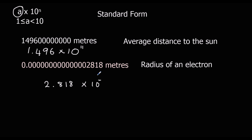How many times are we going to divide it by 10? 1, 2, 3, 4, 5, 6, 7, 8, 9, 10, 11, 12, 13, 14, 15 times. So the radius of an electron is 2.818 times 10 to the power of minus 15 metres.